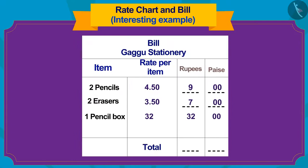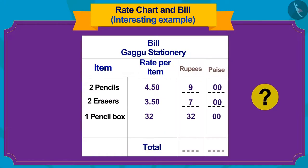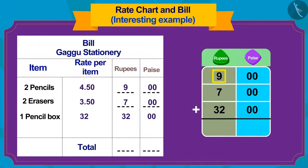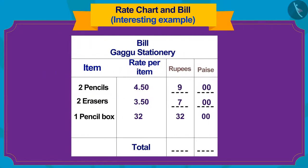Children, now how will we find out the total cost of goods? Yes! If we add 9, 7 and 32 rupees, then the total items will be priced exactly 48 rupees. Let us write it this way in the bill.